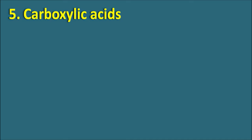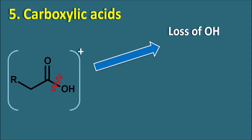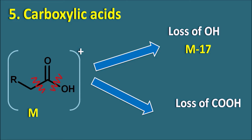Next one is carboxylic acids. They can undergo cleavage to produce loss of the OH group, giving an M-17 peak (OH has mass 17). Otherwise, they can undergo cleavage to produce loss of the COOH group: carbon (12) plus oxygen (16) plus oxygen (16) plus hydrogen (1) equals 45. This gives an M-45 peak. So M-17 and M-45 peaks indicate the presence of a carboxylic acid.